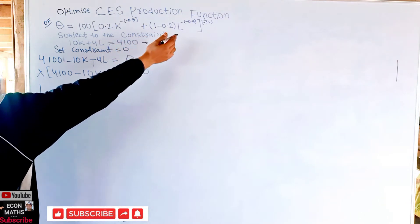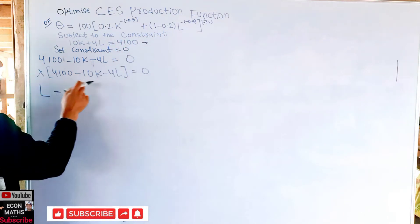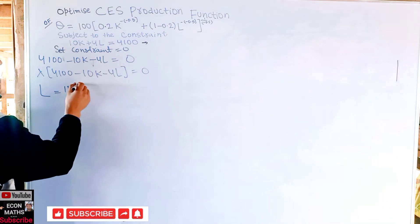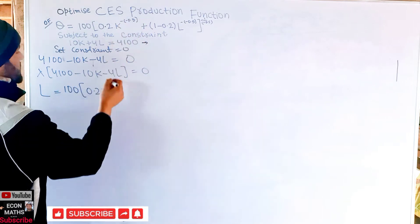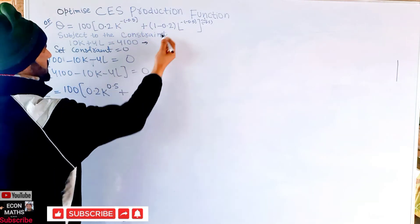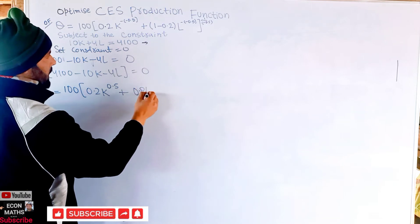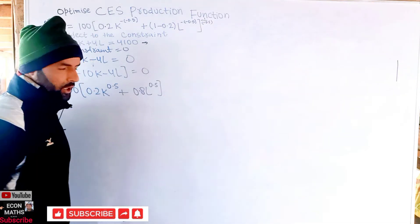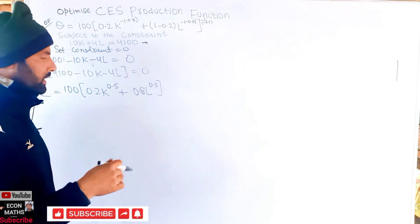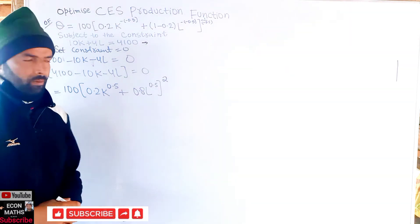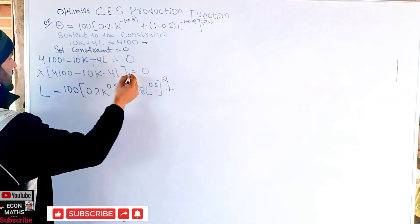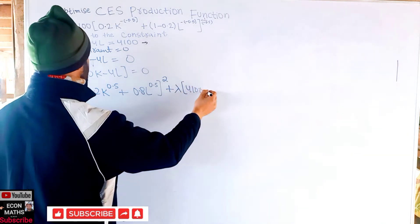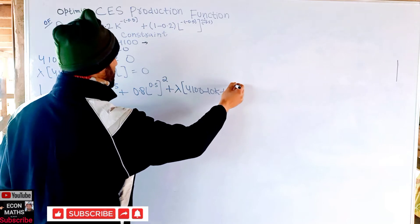Our Lagrangian function is: L = 100 × (0.2 K^(0.5) + 0.8 L^(0.5))^2 + λ(4100 − 10K − 4L). Note that the double negatives in the exponents cancel: minus times minus gives plus 0.5, and 1/0.5 = 2.